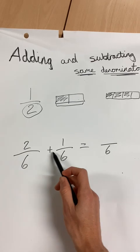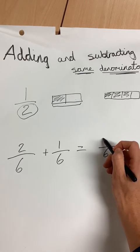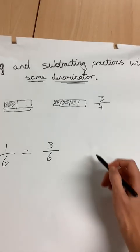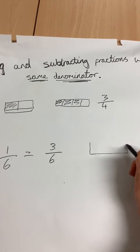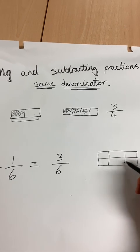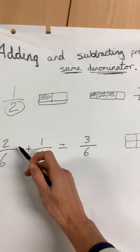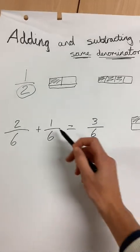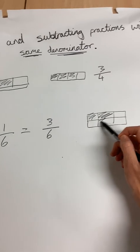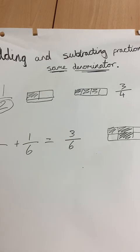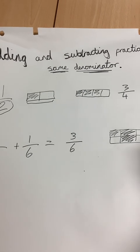And then we simply add the numbers on the top. That is because if you have two sixths, and then you add another sixth, you have three sixths. You don't have three twelfths,